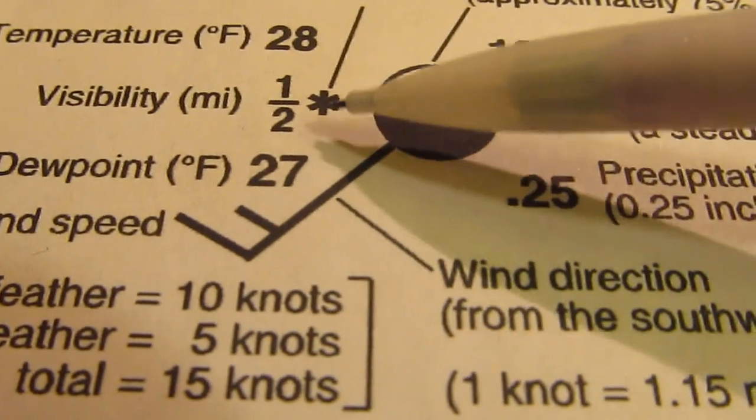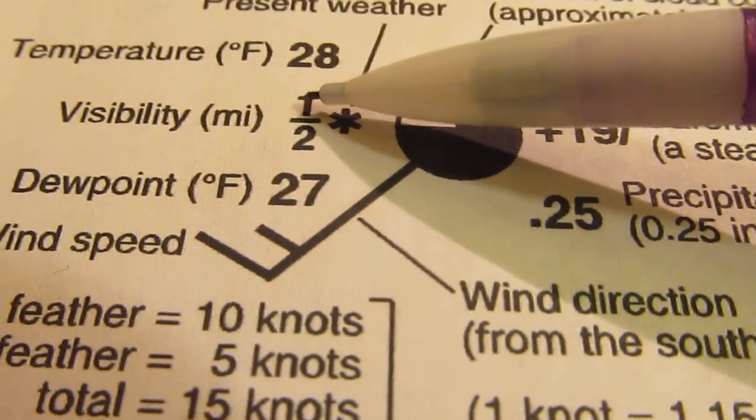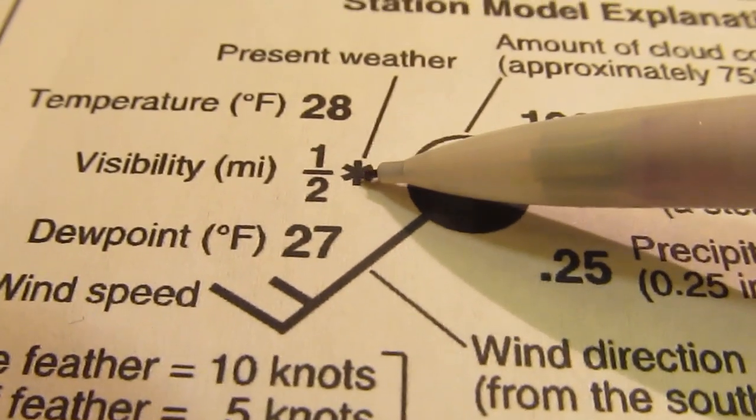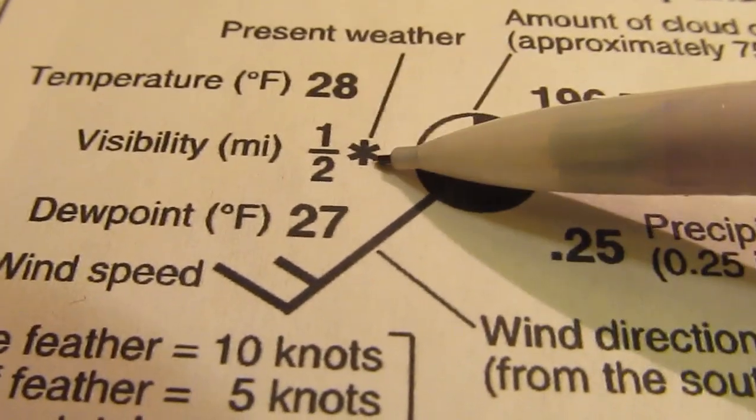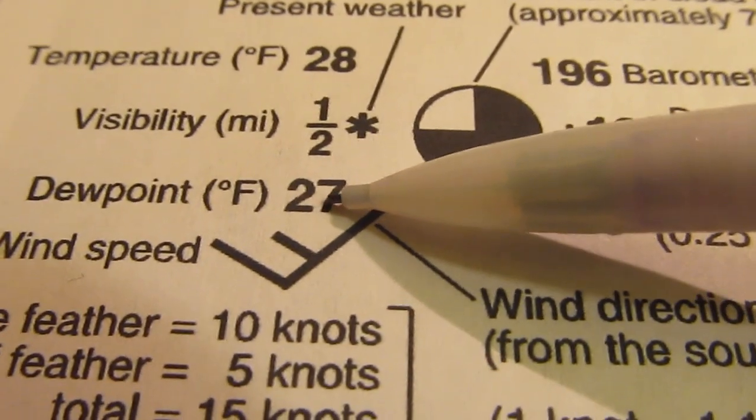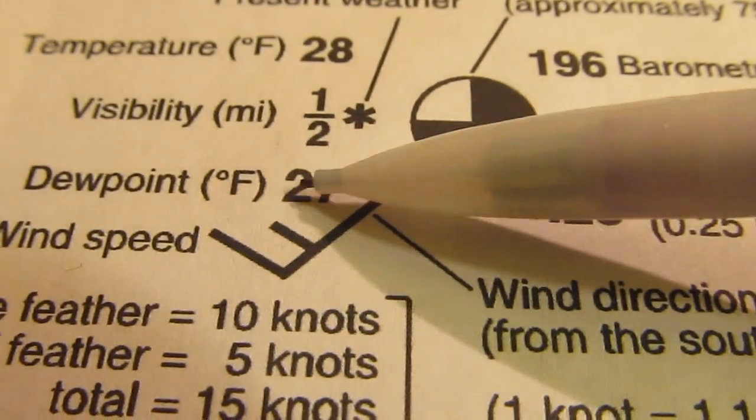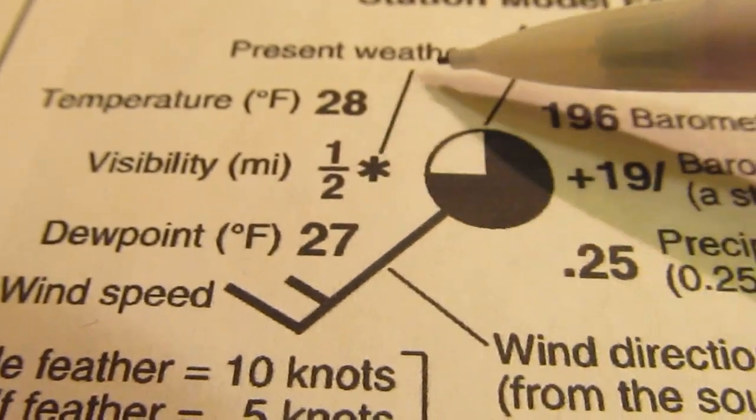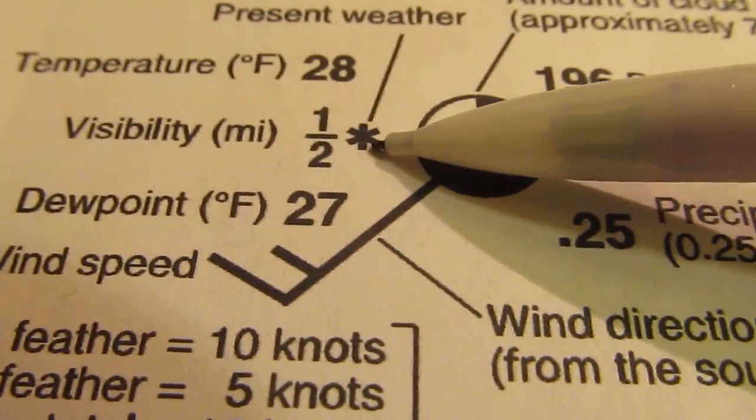Then you've got the number one half, which is your visibility in miles. You've got the little symbol for present weather. And underneath that, you've got your dew point, which is also given in Fahrenheit.